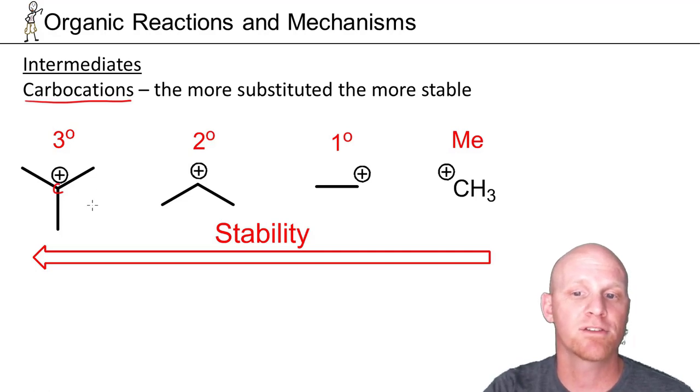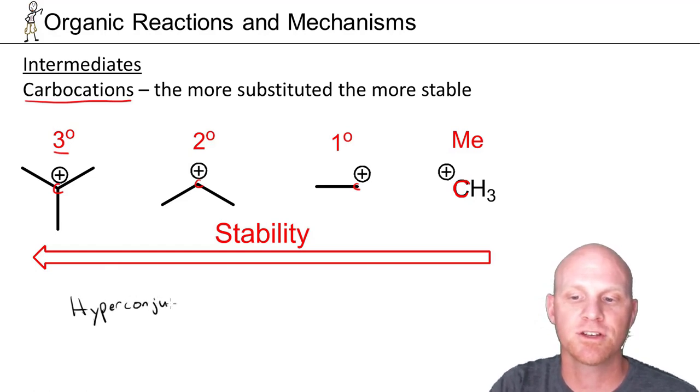We rank carbocations based on how many carbons they're bonded to. This carbon right here is bonded to three other carbons, so it gets the rank tertiary, which we abbreviate with this three-degree symbol. Some people say three-degree, but you really should say tertiary. Here's a secondary carbocation, a primary carbocation, and a methyl carbocation not bonded to any additional carbons. The more substituted, the more stable. It comes down to something we call hyperconjugation.